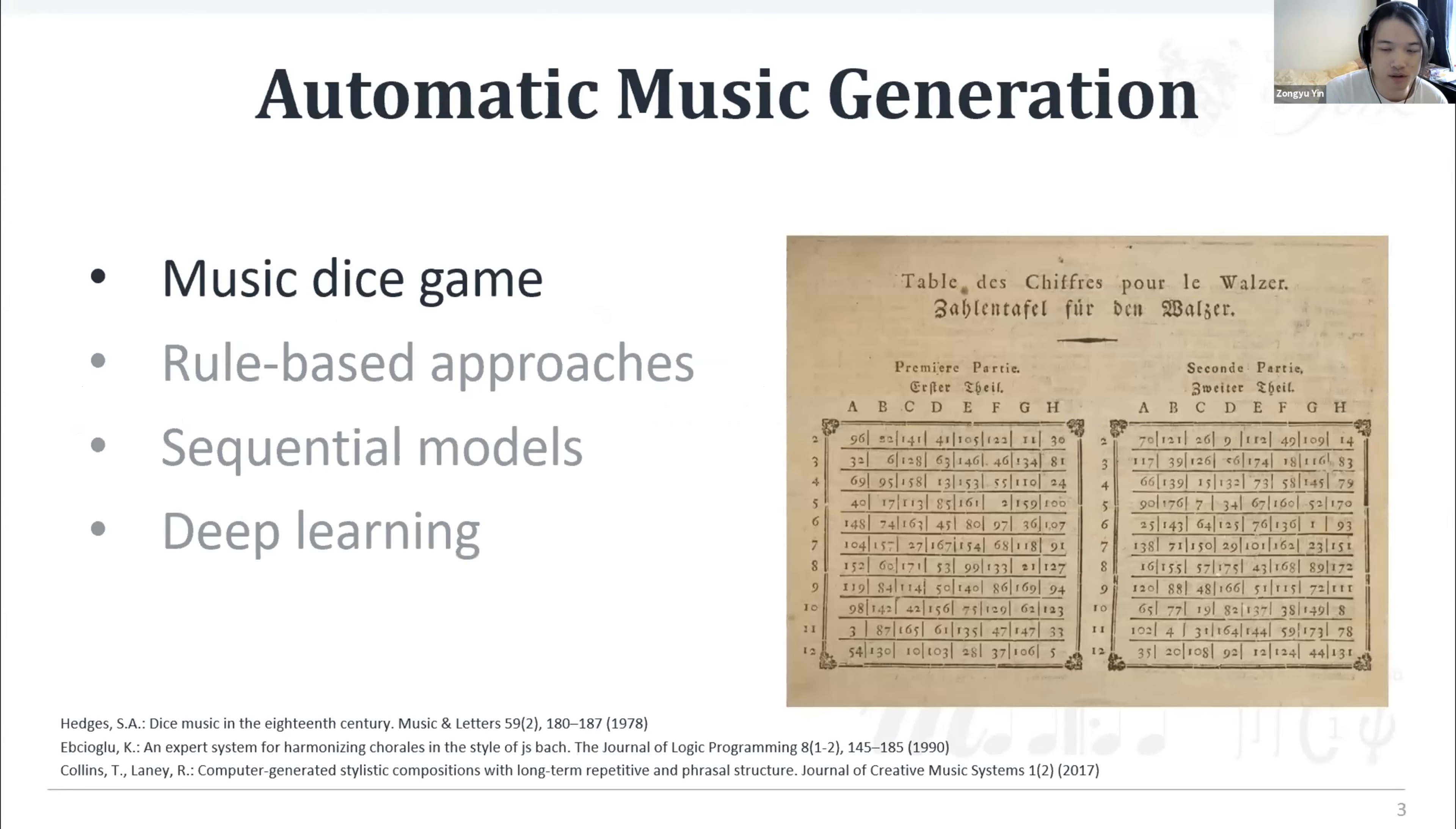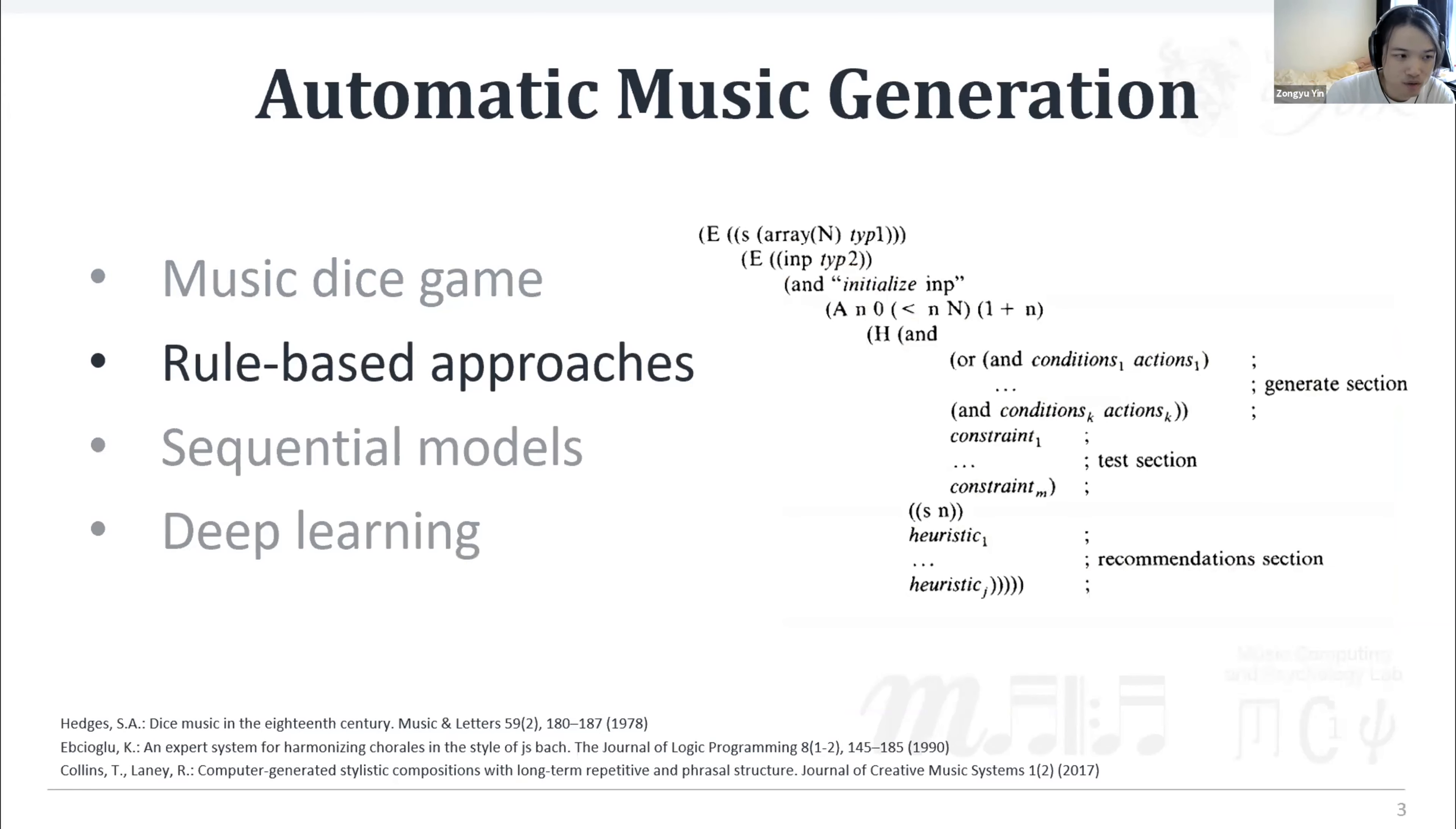There are various approaches to automatic music generation in chronological order. Music dice game is a very early example where a piece of music can be formed by randomly and consecutively selecting from a set of phrases that are prepared in advance. Rule-based approaches, also known as expert systems, impose a collection of rules or constraints which are normally produced by expertise and empirical knowledge. An expert system can generate music by constantly assessing the current notes have been generated with the constraints and then decide what to generate next.